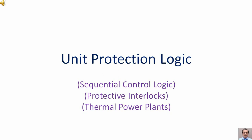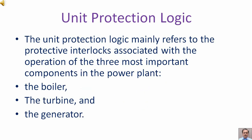Unit protection logic. It comes under sequential control logic and protective interlocks related with thermal power plants. The unit protection logic mainly refers to the protective interlocks associated with the operation of the three most important components in the power plant: the boiler, the turbine, and the generator.